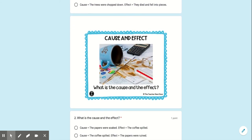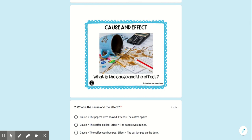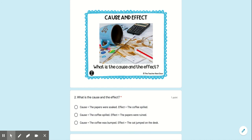Oh man. The papers were soaked is the cause — well, that's not right, because the cause has to happen first. So the second one says the coffee spilled. The effect was the paper was ruined — that would make sense. The last one says the coffee was bumped, which could be it. But the effect was the cat jumped on the desk — that doesn't make sense, there's no cat.